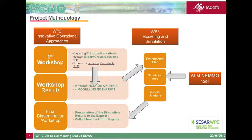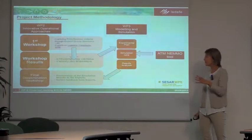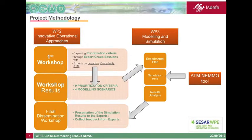The pillar for work package two was the first project workshop, where experts from different fields conducted two expert group sessions. The objectives were to identify a preliminary set of prioritization criteria with out-of-the-box thinking and a preliminary set of modeling scenarios. After the workshop, we analyzed the results and identified nine prioritization criteria and four modeling scenarios. We then defined the experimental plan as the basis for simulation runs using the ATM NEMO tool.